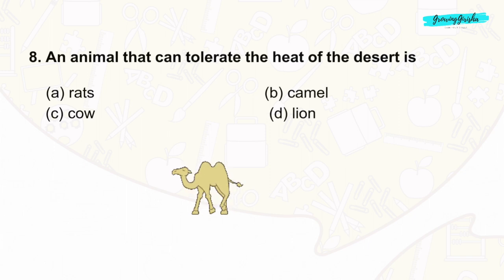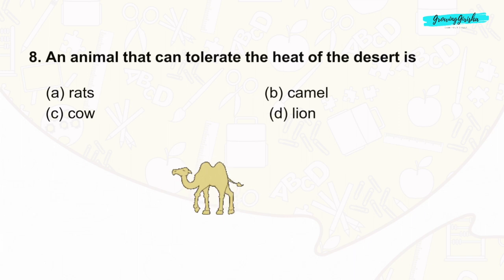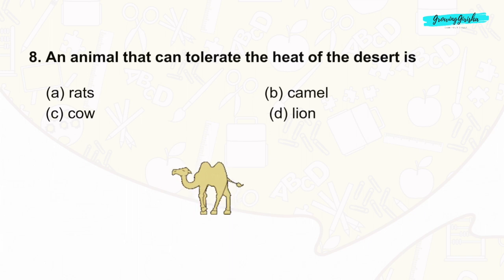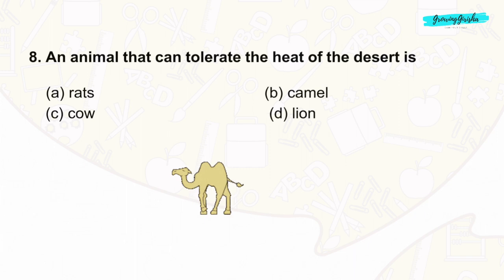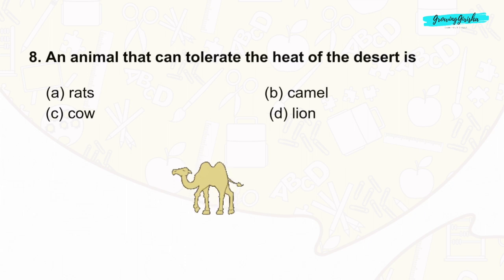Question 8: Animals that can tolerate the extreme heat and harsh environmental conditions of the desert are referred to as xerophilic animals. These creatures have evolved adaptations such as efficient water conservation mechanisms and heat-resistant traits. Examples include camels, desert tortoises, and certain lizards. The correct answer is option B: camel.